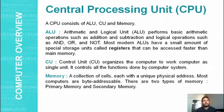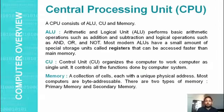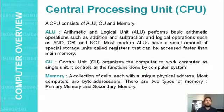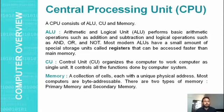Next is the Central Processing Unit — the brain of the computer. A CPU consists of three parts: ALU, CU, and Memory. ALU — Arithmetic and Logical Unit — performs basic arithmetic operations such as addition, subtraction, multiplication, and division, and logical operations such as AND, OR, and NOT. Most modern ALUs have small storage units called registers for fast data accessing. The Control Unit controls all functions performed by the computer system — all input, processing, and output functions.